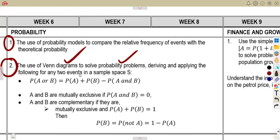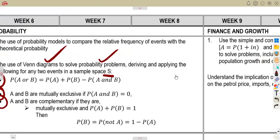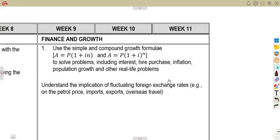Deriving and applying the following for any two events in a sample space S. So we are going to apply this sum, the mutual exclusive, mutual exclusive A and B are complementary. The conditions that you are going to apply on the complementary state, that is the part of probability, only this part that you need to use your question papers in the revision.